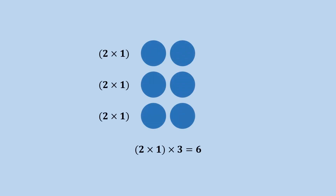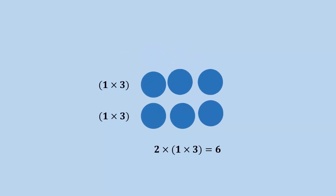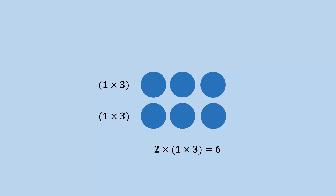Now observe these balls. If we change their arrangement, the total number of balls will not change. In other words, we can multiply any two numbers first. The same is true for the multiplication of three rational numbers.